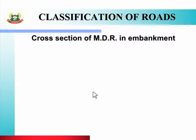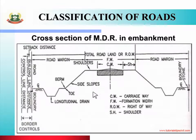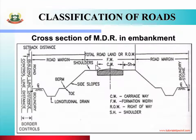Next, we will see cross section of major district road in embankment. See the picture of cross section of major district road in embankment. यहाँ आप carriageway, formation width, right of way, shoulder, side drain इत्यादी road geometrical components देख सकते हो.